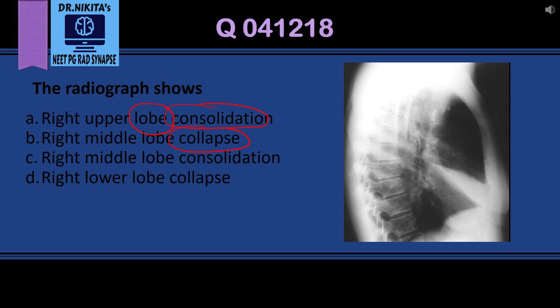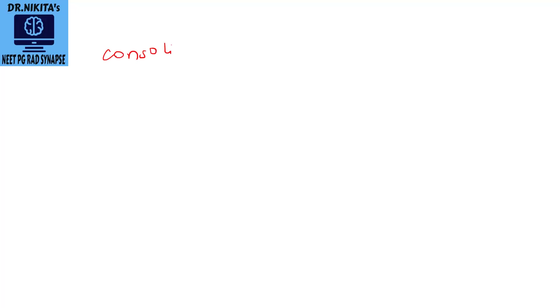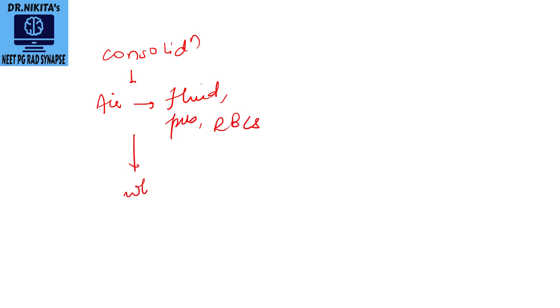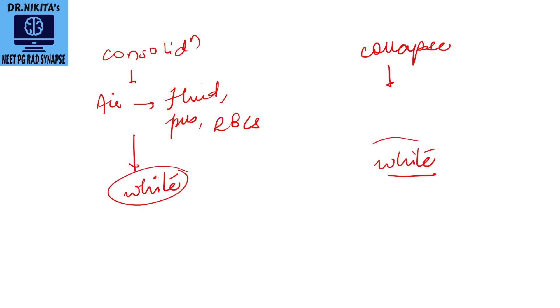We should know the difference between consolidation and collapse. Consolidation is nothing but replacing air in the alveoli with either fluid, pus, or RBCs — basically something more dense than air — so it will look white. Collapse means removal of air, so it will also look white because we have removed the black air. Both consolidation and collapse will look white.